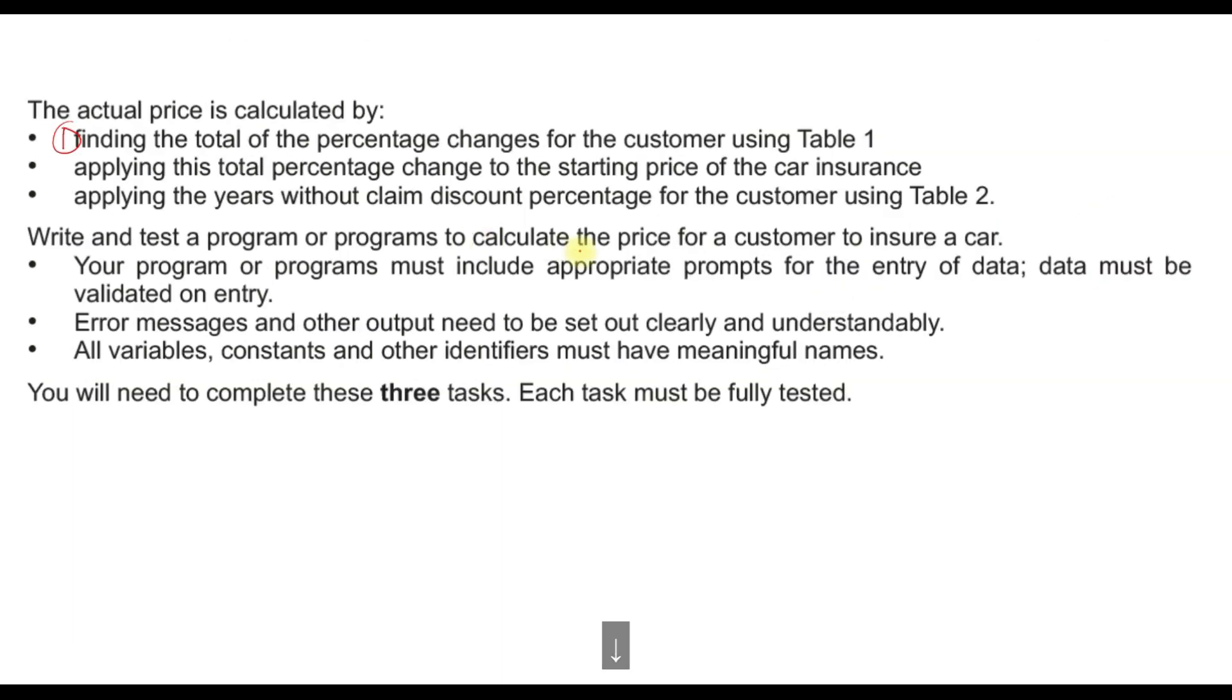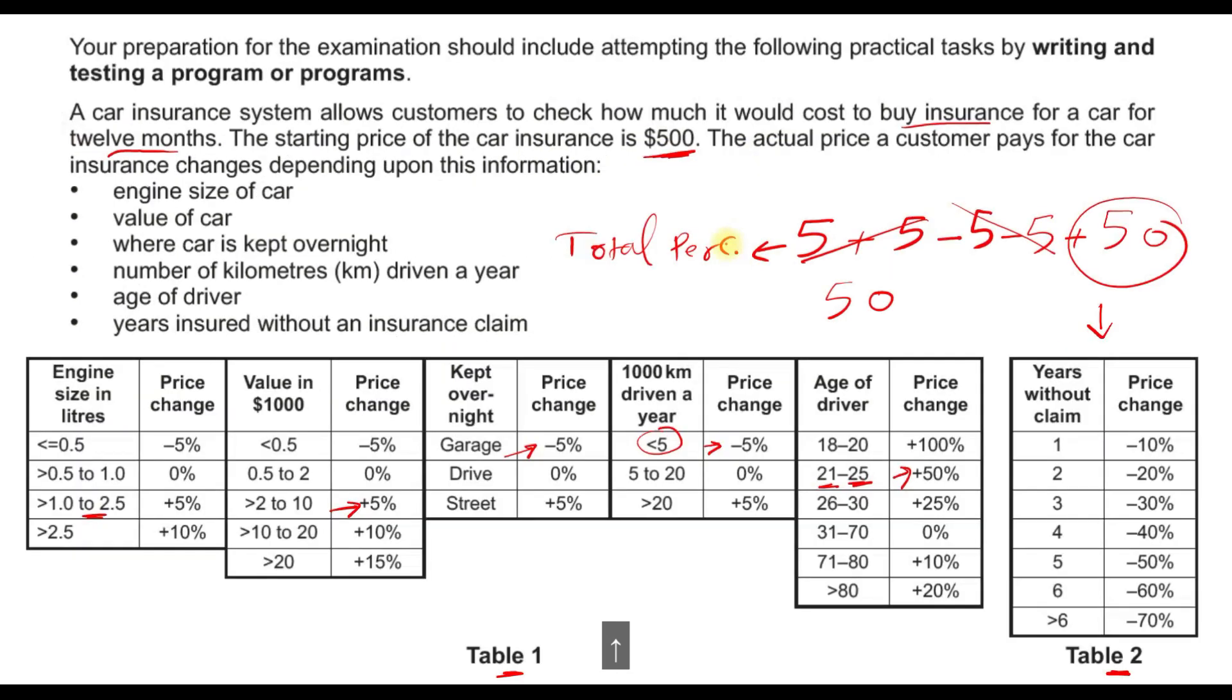This is the first point, finding the total percentage changes for the customer using Table 1. Then requirement number 2 is applying this total percentage change to the starting price of the car. What is the starting price of the car? It was $500 as shown on top. So we will apply 50% to the basic price of the insurance. We will deduct 50%, so 50 times 500 over 100.